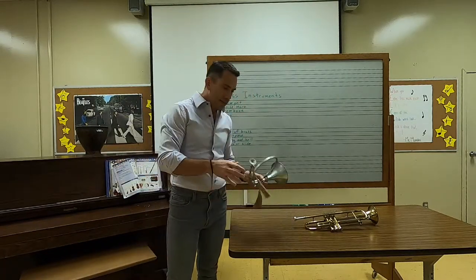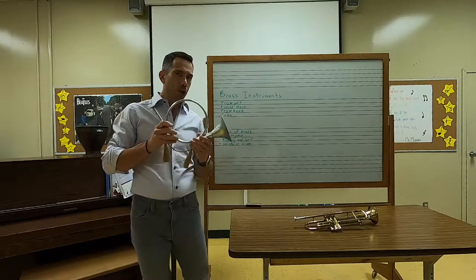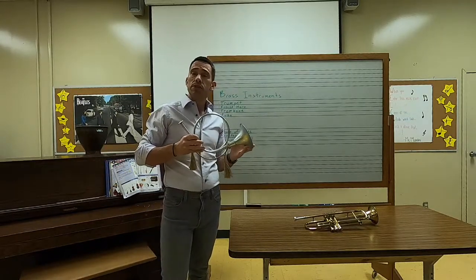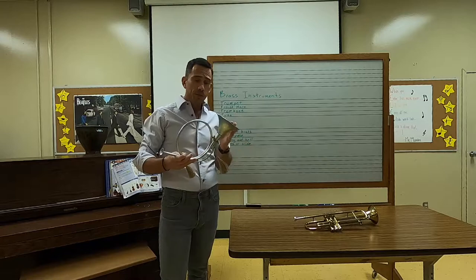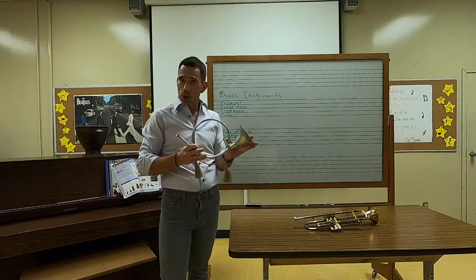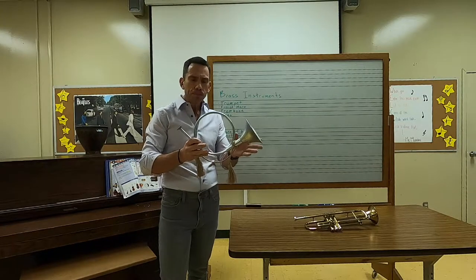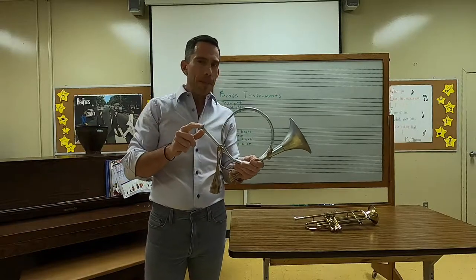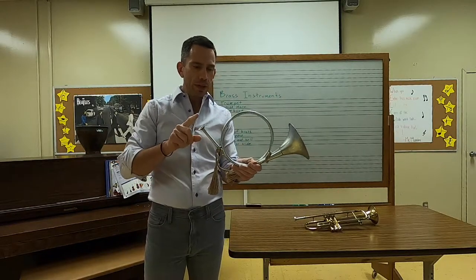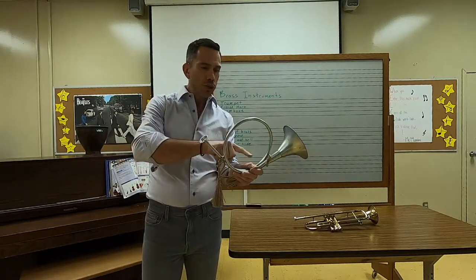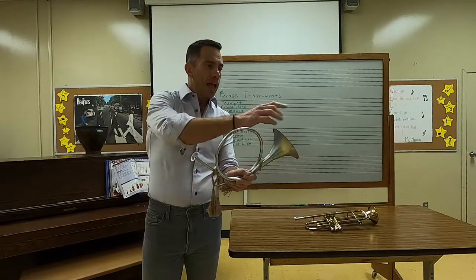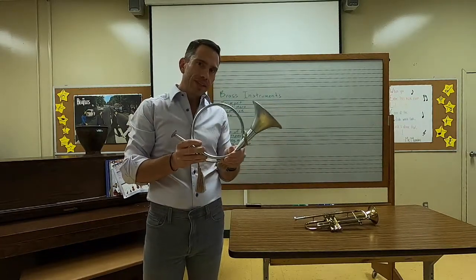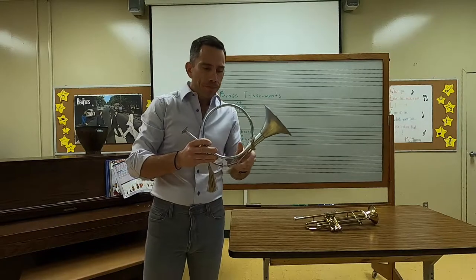The first instrument I brought in today is actually just a toy, but this is what brass instruments looked like a long time ago. It's pretty simple — it looks like a small French horn. A long time ago, brass instruments just had a mouthpiece you'd blow into, a tube that winds around, and then a bell at the other end. That's how they started.